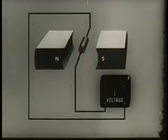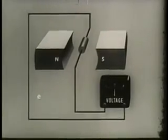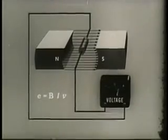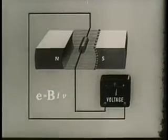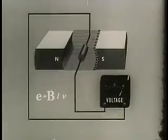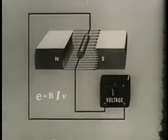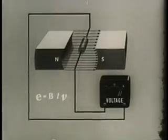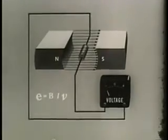The instantaneous EMF E equals B, the strength of the field, times L, the length of the conductor cutting lines of force, times V, the velocity of the conductor. An increase in the number of lines of force, or the strength of the field, increases the instantaneous EMF in the conductor. Increases in the length of the conductor cutting lines also increases the EMF. And finally, the greater the velocity of the conductor, the greater the EMF.